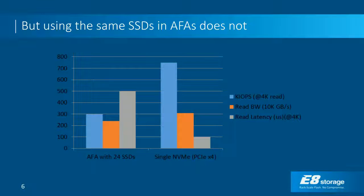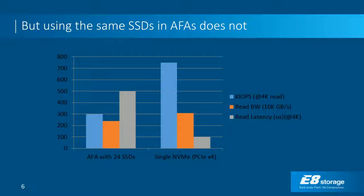To illustrate the bottleneck problem: an all-flash array like EMC Extreme IO with 24 SSDs delivers about 300,000 IOPS at roughly half a millisecond latency. Compare that to a single NVMe SSD, and a single SSD can actually outperform an entire cluster of four such EMC boxes. The same is true for Pure, SolidFire, etc. All-flash arrays, meant for disk replacement, can't compete in the world of high-speed analytics and machine learning.